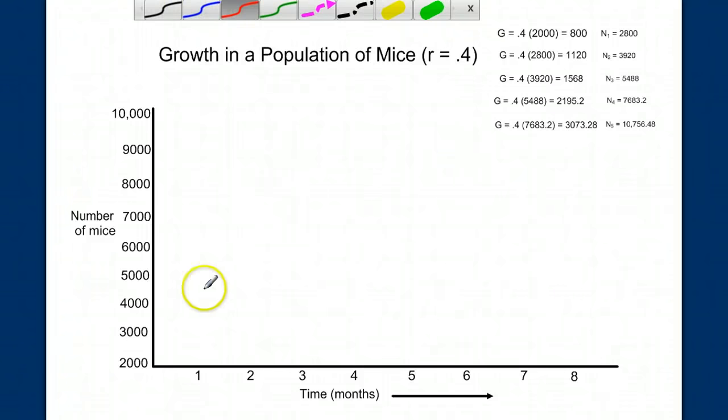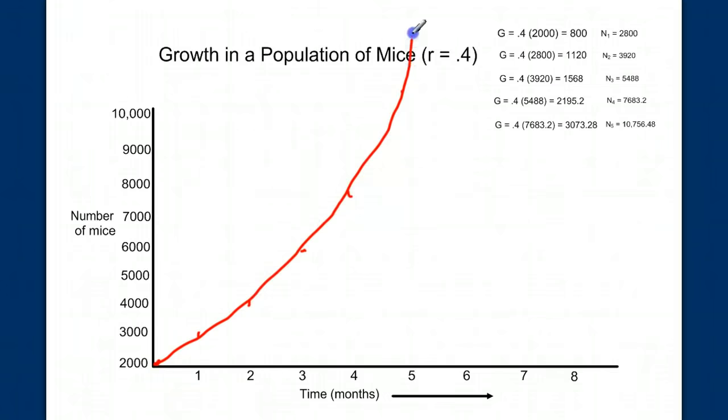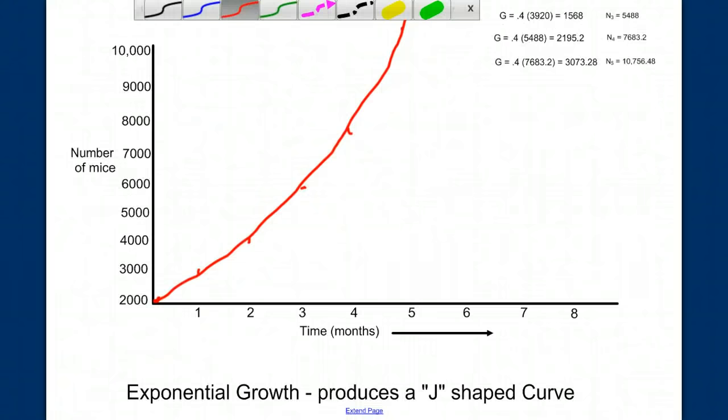Let's pick a pen, and our original population is 2,000. And at one month, we are at 2,800, so right about there. That might be a little high. And at two months, we're at 3,920, so we're nearing to 4,000. And at three months, we are at 5,488, so right about there. And then at four months, we're at 7,683, so put a mark there. And at five months, we are at over 10,000. So let's see what the shape of that line looks like. Hopefully, you can see that this line is, I'll grab a pen here, the slope is increasing. And eventually, it will continue to increase, and it can get steeper. And we call this exponential growth curve. And it gives us a J-shaped curve.